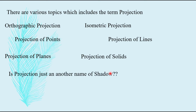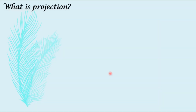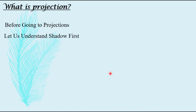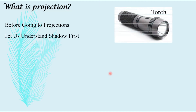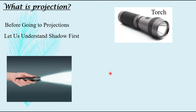Now, is projection just another name of the shadow? Let us try to understand. What is projection? Before going to projections, let us understand the shadow first. So there is a torch, and when you start the torch, the light rays which are emitted from that torch are scattering away and they are spreading wide.